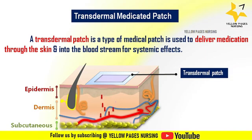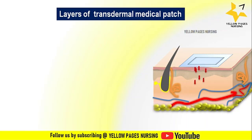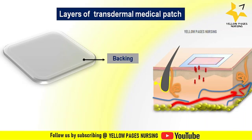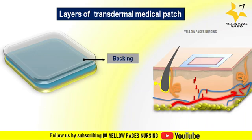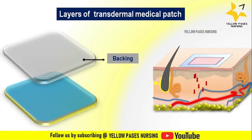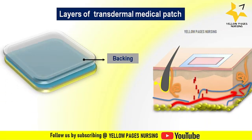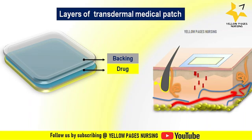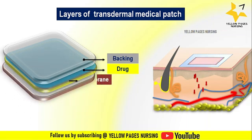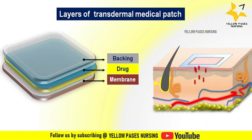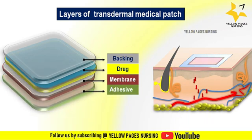Looking at the layers of a transdermal medicated patch: the first layer is the backing, the outermost layer like a protective shell, made of flexible, durable, and waterproof material that keeps the patch intact. The next is the drug layer, which contains the medication and is designed to release it slowly and steadily over time. The next layer is the membrane, a selective barrier that controls the rate at which the drug is released. Following that is the adhesive layer, like a sticky glue on the underside of the patch, allowing it to adhere securely to the skin.